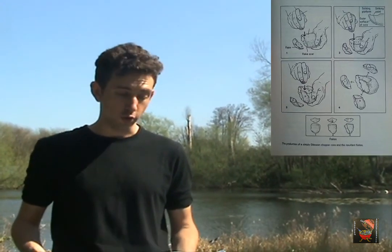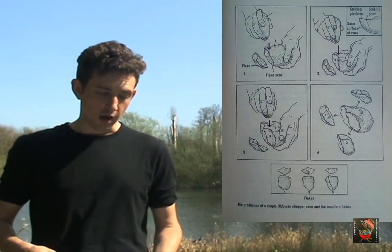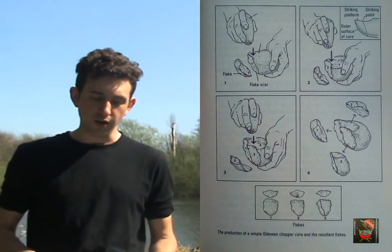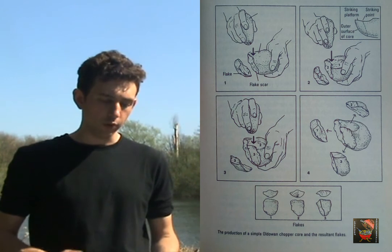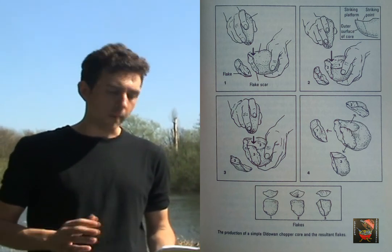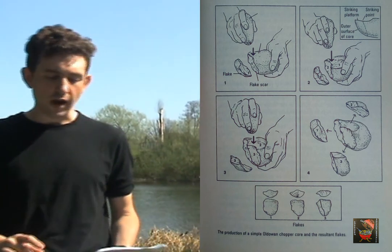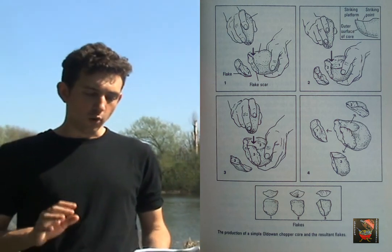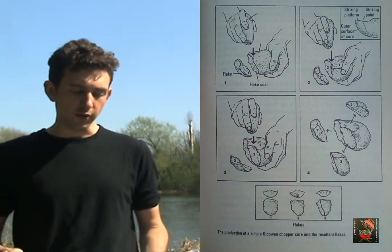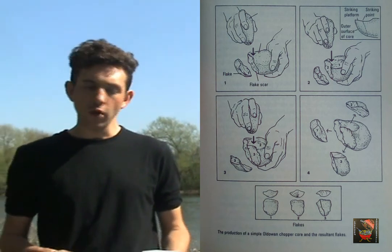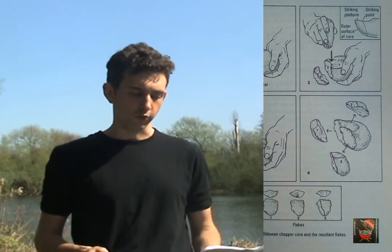The earliest stone tool technology is known as Mode 1 in Graham Clark's system of stone tool modes. The oldest representative of these industries used to be the Oldowan, named after the famous site of Olduvai Gorge in Tanzania. Subsequently, the site of Lomekwi in Kenya has replaced this with an even older industry known as the Lomekwian. All Mode 1 industries share the characteristic of being core and flake industries, meaning simple flakes struck from cores constitute the primary component of these assemblages.